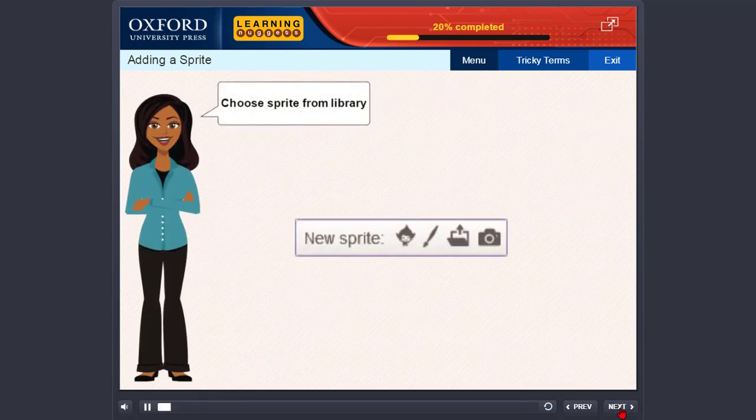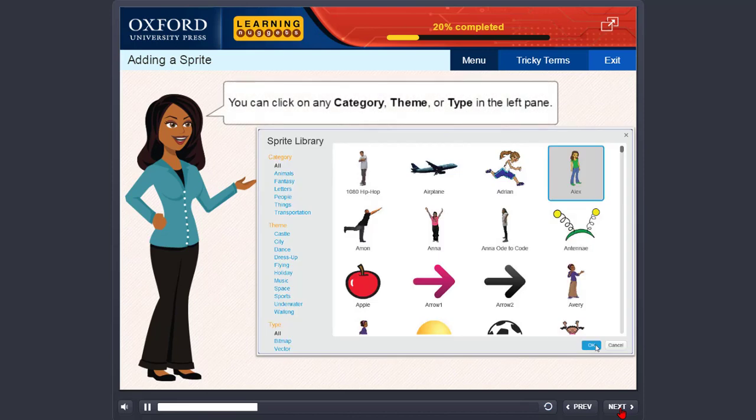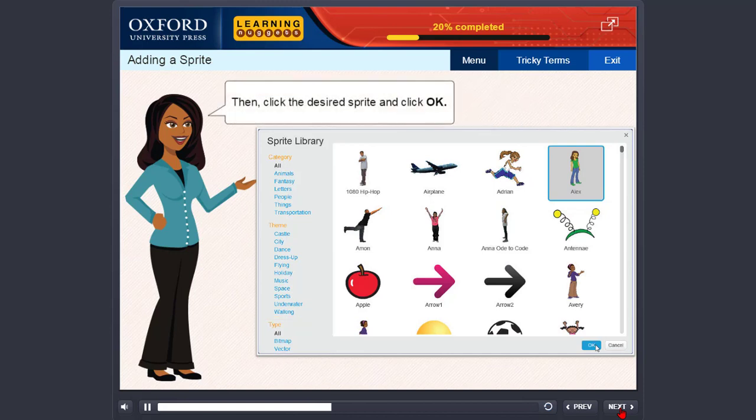Choose sprite from library. Click this option to open the sprite library. You can click on any category, theme or type in the left pane. Then, click the desired sprite and click OK.